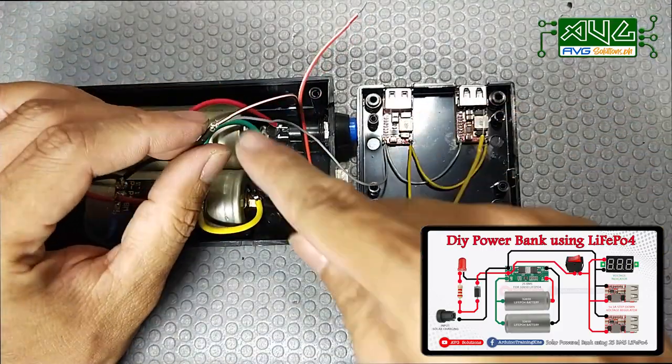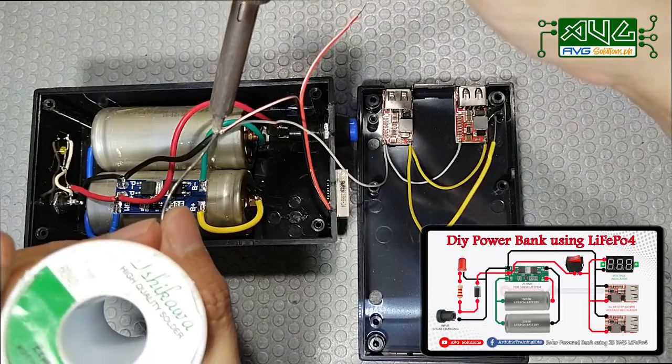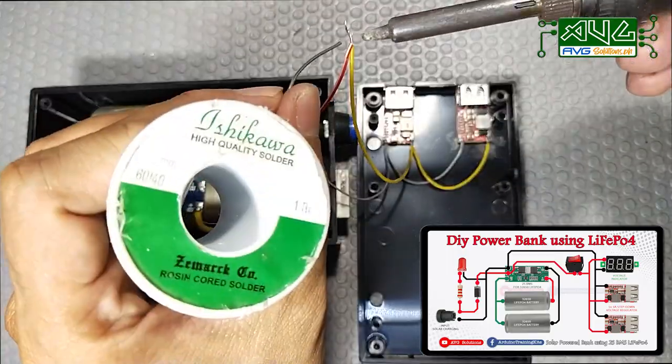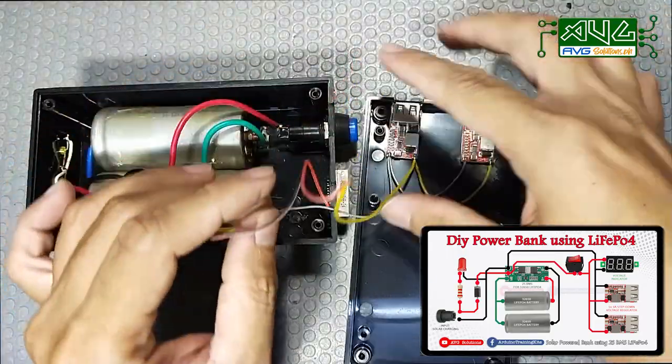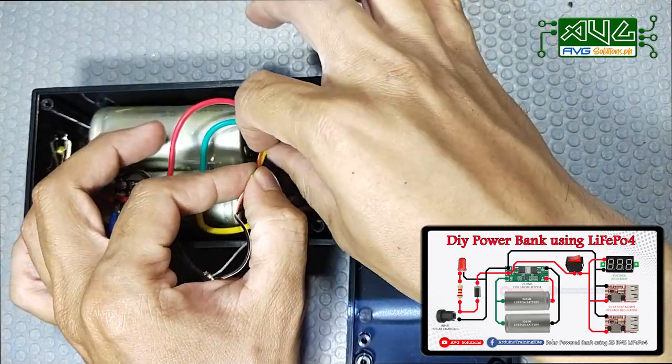Yung kanilang ground connected na directly dun sa ground ng BMS. Itong positive line naman, connected ito dun sa switch.